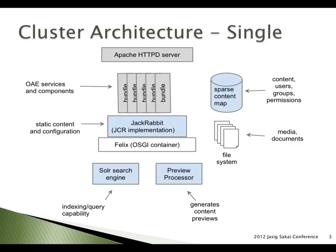Apache handles the basic protocol and can do helpful things like manage SSL and do load balancing, which will become important as we scale. The really interesting part is the middle section with the bundles — that Felix box is the OSGI container, the heart and soul of OAE where all the logic really happens. All the functionality in OAE exists as little bundles deployed in this OSGI container, backed by a JCR implementation — a Java content repository — which can hold static content and configuration like HTML files and static JSON config.